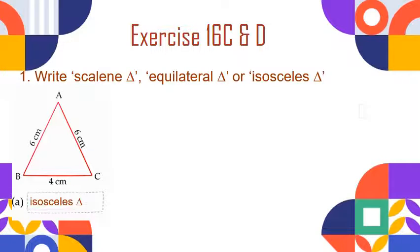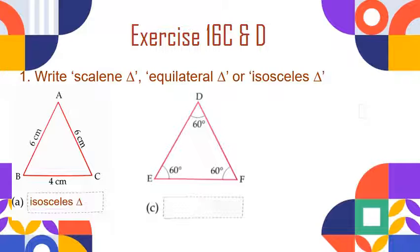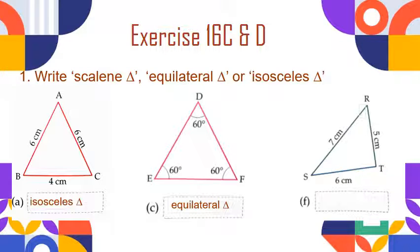Now let us come to the next figure. In this triangle, we can see that all the angles are equal to 60 degrees. A triangle in which all three angles are equal to 60 degrees has all three sides equal — that is, it is an equilateral triangle. Now the third figure shows triangle RST, in which all three sides have different lengths: seven centimetres, five centimetres, and six centimetres. A triangle in which no two sides are equal is called a scalene triangle.